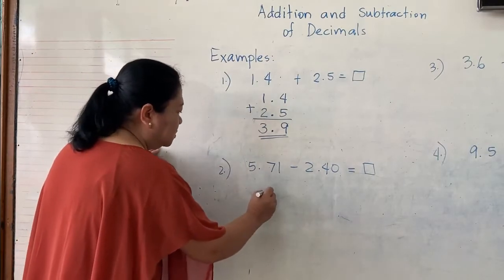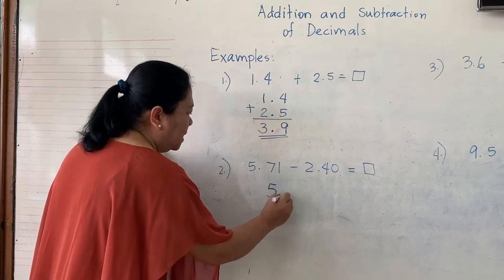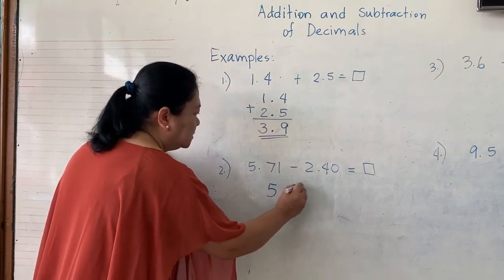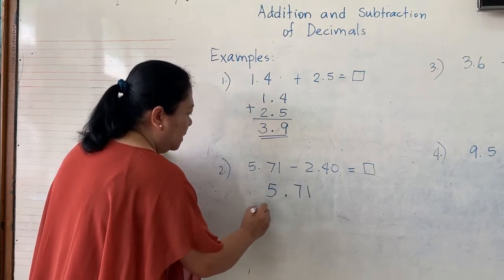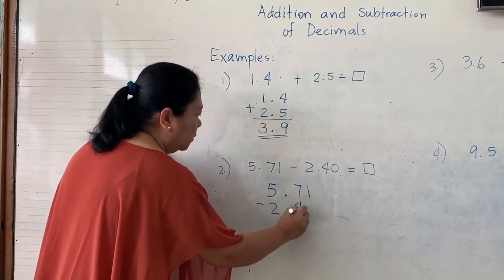So, again, I suggest that you do column subtraction. So, write 5.71 minus 2.40.